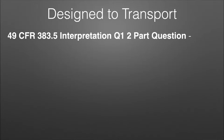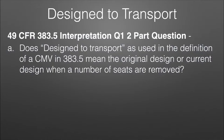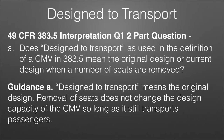This is interpretation question number one in 383.5 — a two-part question broken into A and B. Part A says: does 'designed to transport' as used in the definition of a CMV in 383.5 mean the original design, or the current design when a number of seats are removed? The guidance says: 'designed to transport' means the original design. Removal of seats does not change the design capacity of the CMV so long as it still transports passengers.